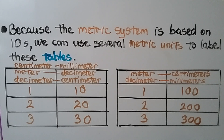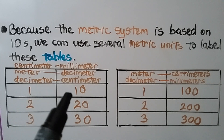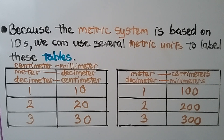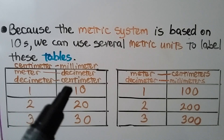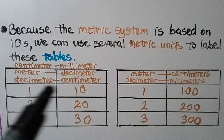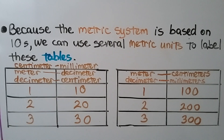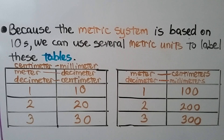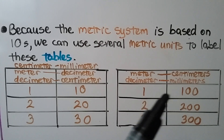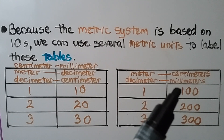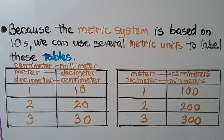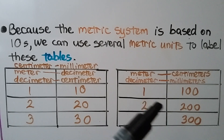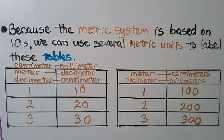Because the metric system is based on 10s, we could use several metric units to label these tables. For 1 and 10, this could be 1 centimeter is 10 millimeters, 1 meter is 10 decimeters, or 1 decimeter is 10 centimeters — any of these fit because of base 10. For 1 and 100, we could say 1 meter is 100 centimeters, so 2 is 200 and 3 is 300. The metric system is easier to use because it's based on the number 10.